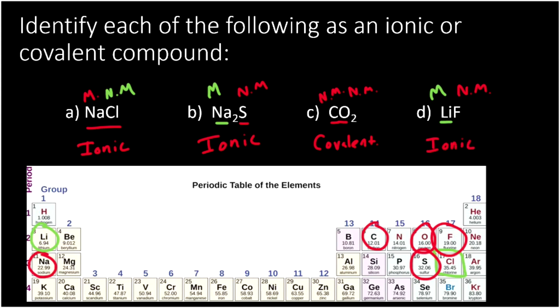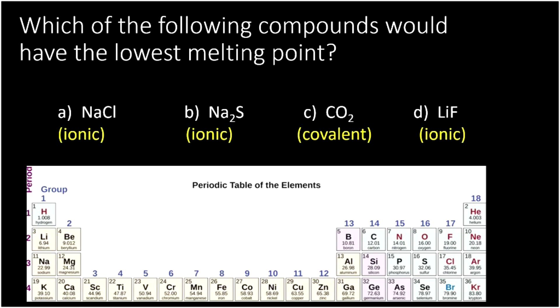Let's answer one more question about these compounds now. Which of the following compounds would you expect to have the lowest melting point? Well, remember, we said that covalent compounds tend to have low melting points. And since A, B, and D are all ionic, that means we would expect them to have high melting points. And we would expect C, carbon dioxide, to have a low melting point.